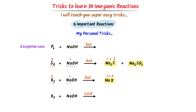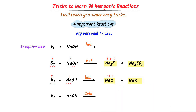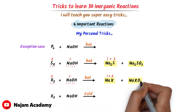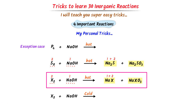What about the second product? According to the trick, I write the first product as it is. We can see that there is oxygen in the reactant — I write O₃. Thus remember: when halogen reacts with sodium hydroxide in hot conditions, we get sodium halide plus sodium halide oxide.